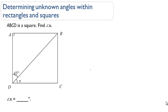Hey, friends. Determining unknown angles within rectangles and squares. If we remember, a property of both rectangles and squares is that they both have four right 90-degree angles.